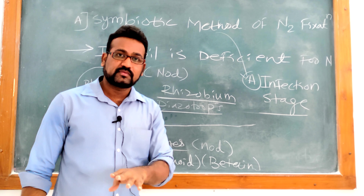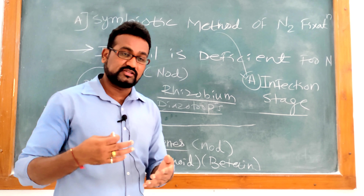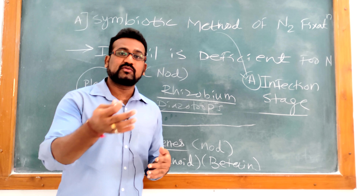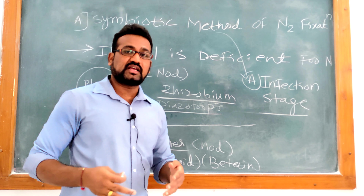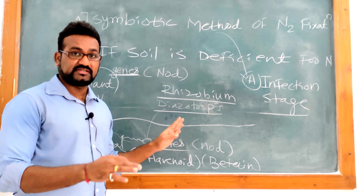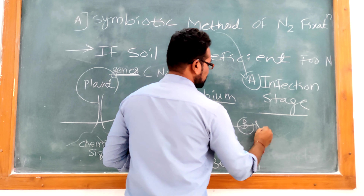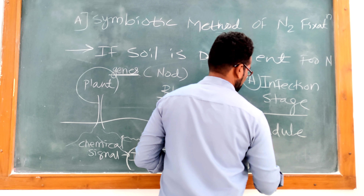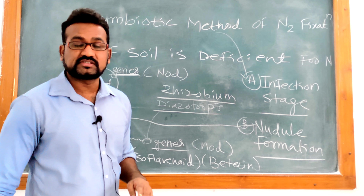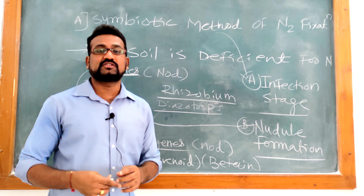Bacteria infect the plant - and the infection is positive, plant does not get harmed by this infection - because it is symbiotic mode of association. Plant gives carbohydrate to the bacteria and bacteria gives Nitrogen-containing compounds to the plant. It was the first step - infection stage. The second stage is nodule formation stage. The word is saying nodule formation, and we will discuss what this step includes in detail.